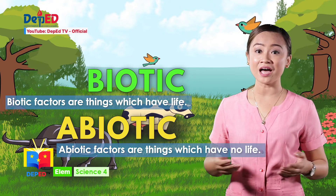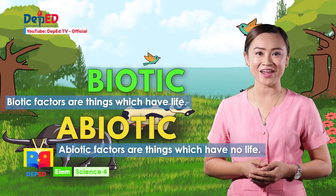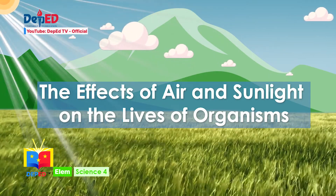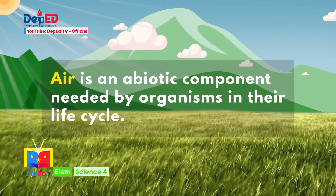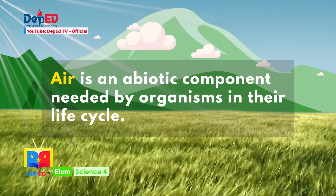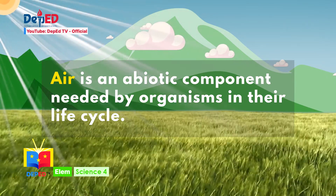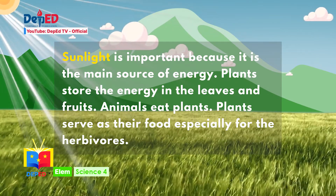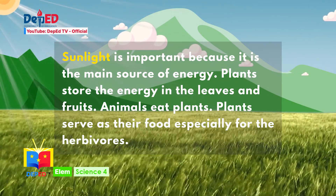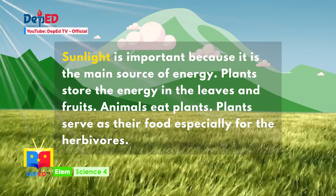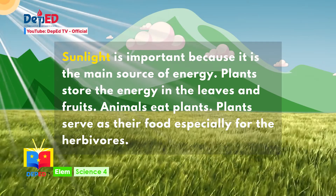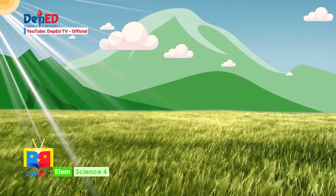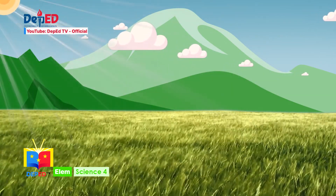Air, an abiotic component, is needed by organisms in their life cycle. Sunlight is important because it is the main source of energy. Plants store the energy in the leaves and fruits. Animals eat plants — plants serve as their food, especially for the herbivores. When air is polluted and there is not enough sunlight, the life cycle of organisms is hindered or flawed.